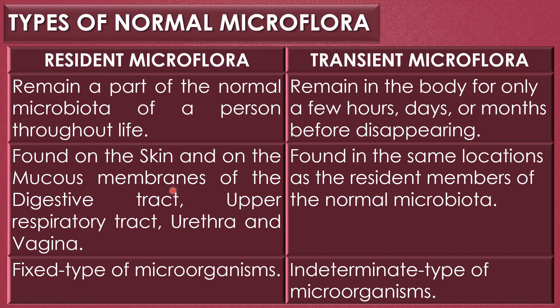Resident microflora are found on the skin and mucous membranes of the digestive tract, upper respiratory tract, distal portion of the urethra, and vagina. Transient microbiota are found in the same locations as resident members. Resident microflora are generally non-pathogenic in nature, whereas transient microflora are intermediate types of microorganisms which can be non-pathogenic or potentially pathogenic.